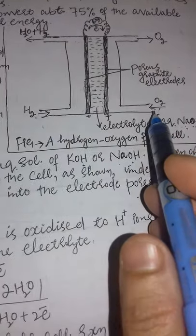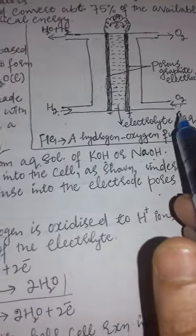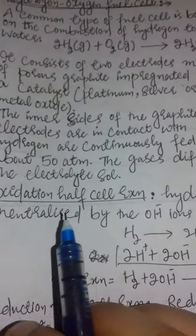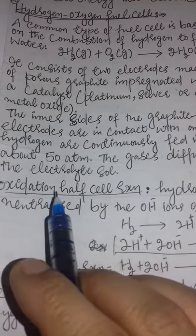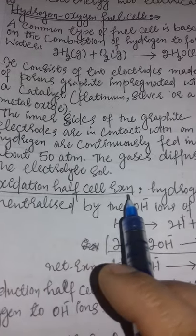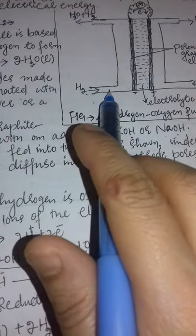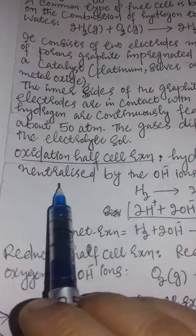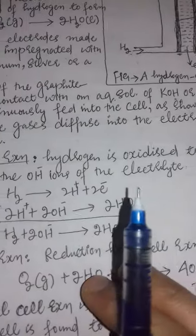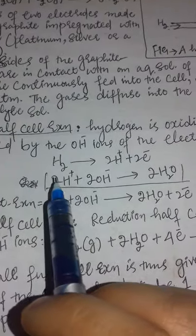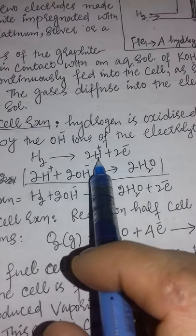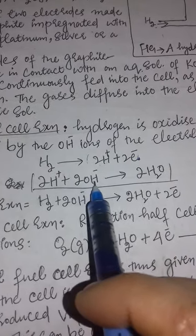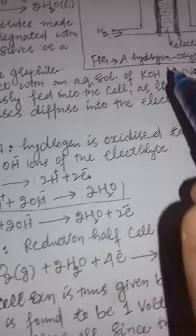Now let's see the anode half-cell reaction and the cathode half-cell reaction. At the anode (oxidation half-cell, left side), hydrogen is present. Hydrogen is oxidized to H⁺ ions, which are neutralized by OH⁻ ions of the electrolyte. Hydrogen breaks into H⁺ plus 2 electrons — that is oxidation. Then these 2 H⁺ ions react with 2 OH⁻ ions from the electrolyte — NaOH dissociates into Na⁺ and OH⁻ ions.